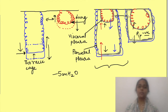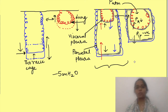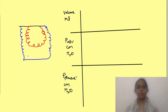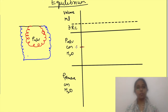Since the lungs are kept expanded at rest due to the pull by the thoracic cavity, this expansion decreases the pressure inside the lungs — the alveolar pressure — slightly, and some air moves into the lungs from the atmosphere until alveolar pressure equals atmospheric pressure. The amount of air present inside the lungs at this equilibrium point is the functional residual capacity, which is maintained simply by the virtue of the elastic forces acting against each other.